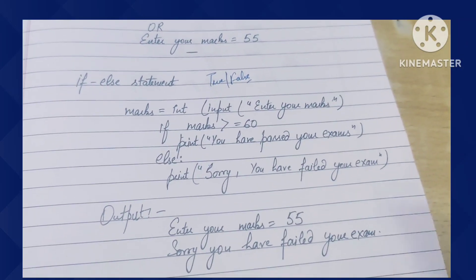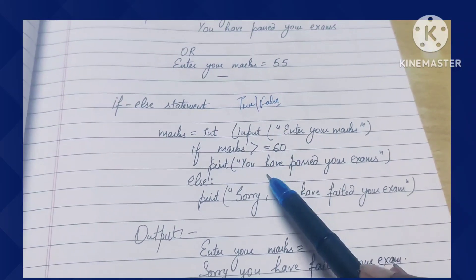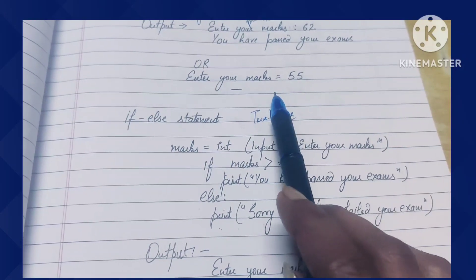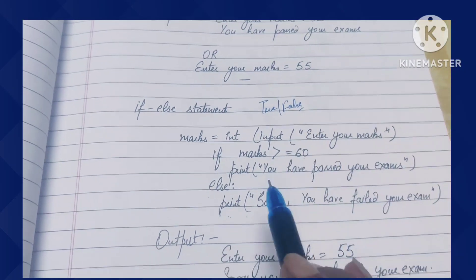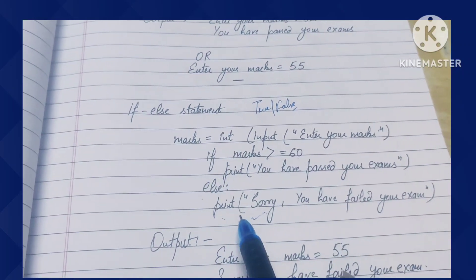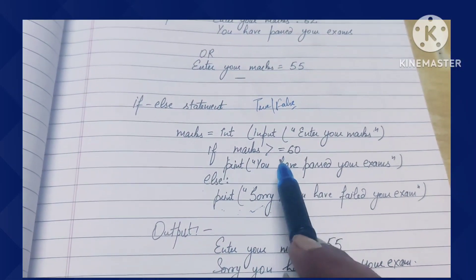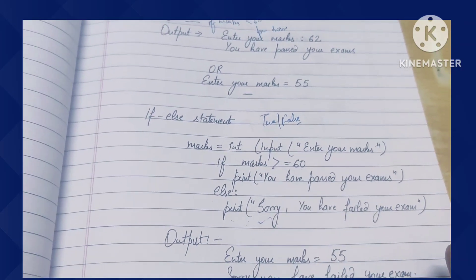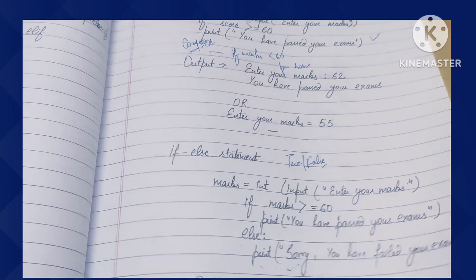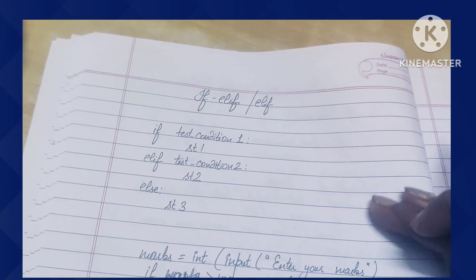The if-else statement has two parts: true and false. In the same marks program with amendment: if the user's marks are greater than or equal to 60, then print a pass message; otherwise print 'Sorry, you have failed your exam.' With marks of 55, the condition is false, so the else part runs. The difference between simple if and if-else is that if-else has both a true part and a false part.